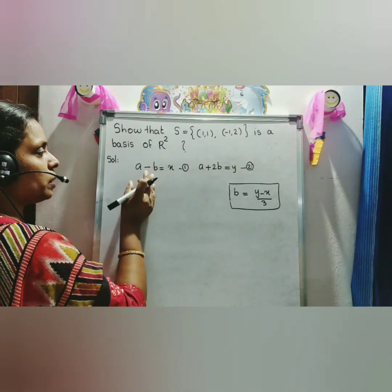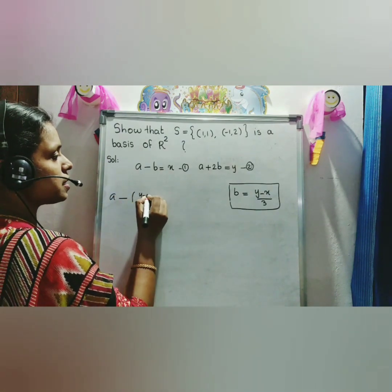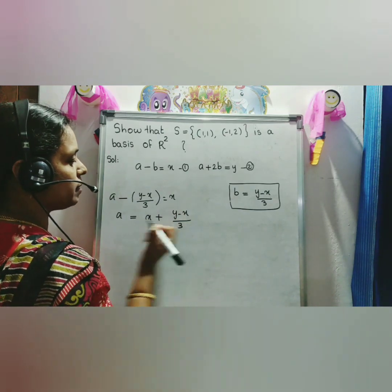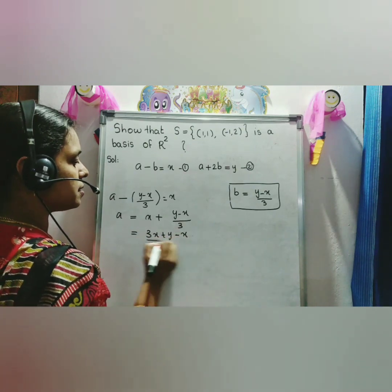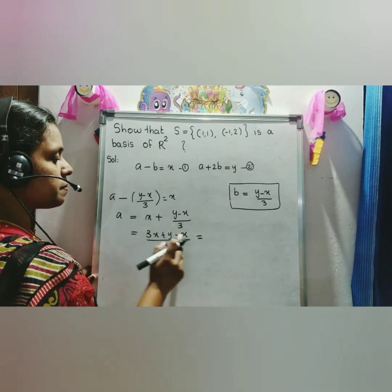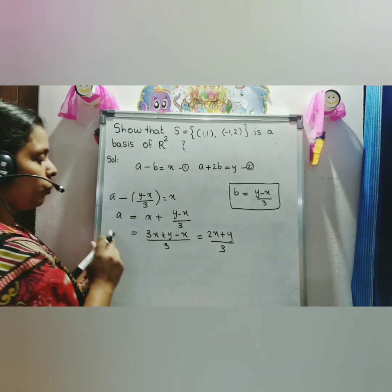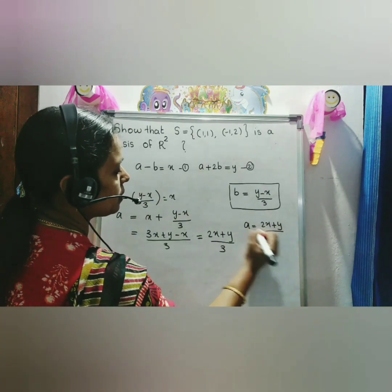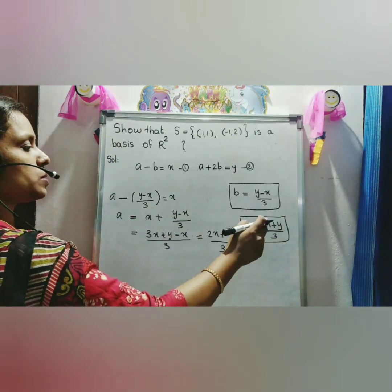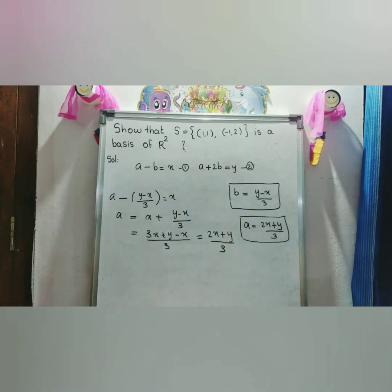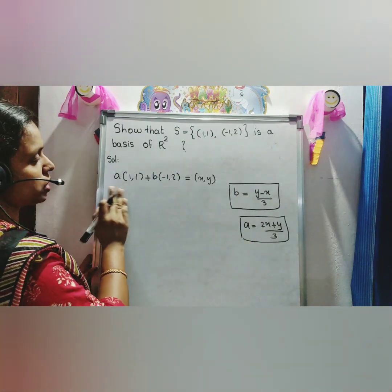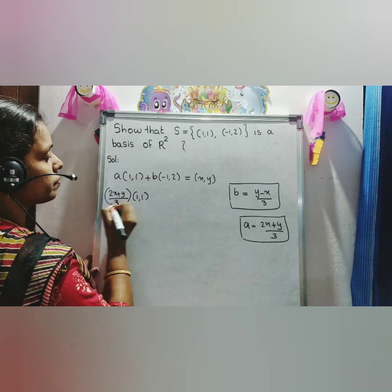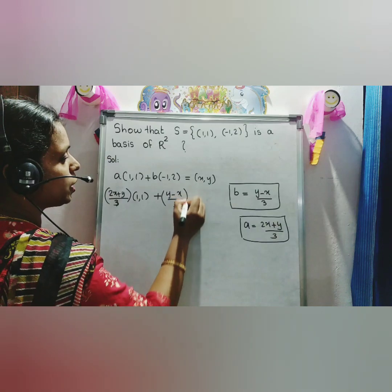Putting the value of B into equation 1: A - (y - x)/3 = x. Then A = x + (y - x)/3 = (3x + y - x)/3 = (2x + y)/3. So A = (2x + y)/3 and B = (y - x)/3. Substituting back: A·(1,1) + B·(-1,2) = (2x+y)/3 · (1,1) + (y-x)/3 · (-1,2).